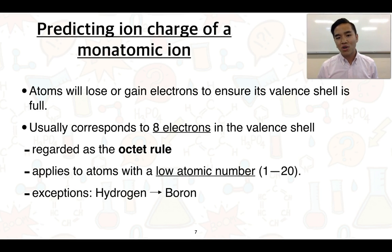This usually corresponds to 8 electrons in the valence shell, which we commonly refer to as the octet rule. But keep in mind that this only applies to atoms with a low atomic number. At the moment we're only talking about elements 1 through 20, and this does apply for these elements in most cases. There are a couple of exceptions. From hydrogen through to boron, this octet rule doesn't apply for these particular low atomic number elements.